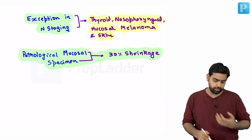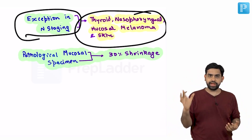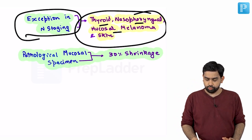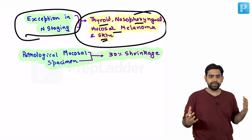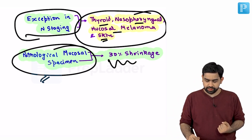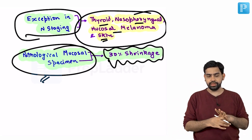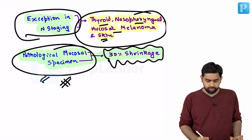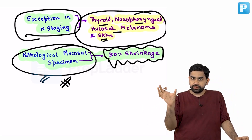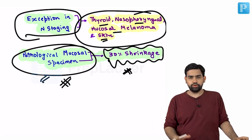Important exceptions to the N staging: thyroid, nasopharyngeal carcinomas, mucosal melanomas, and skin malignancies of the head and neck do not follow the same TNM staging system discussed here. Also, pathological mucosal specimens are approximately 30% smaller than the original tumour, which must be considered when applying pathological TNM staging.